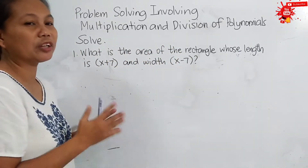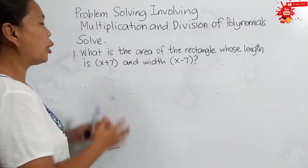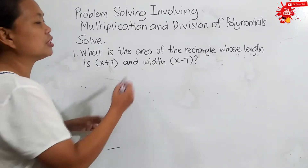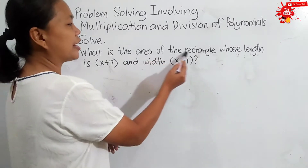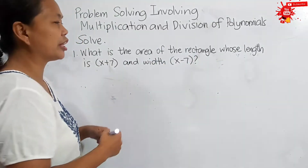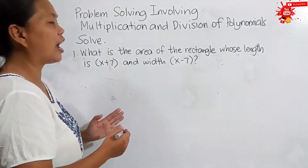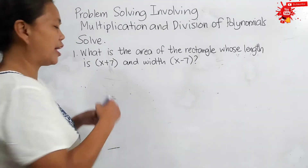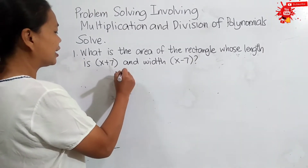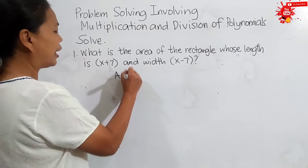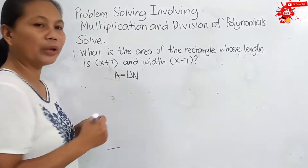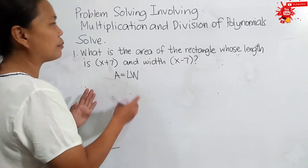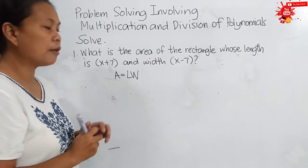First, to identify what operation, we need to find out what the problem is asking for. The problem is asking for the area of the rectangle, so it involves the formula for finding the area of the rectangle. The formula is: area is equal to length times width. So, the operation we are going to use is multiplication of polynomials.